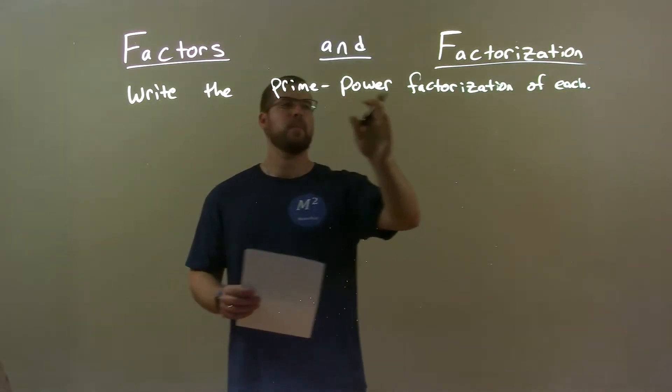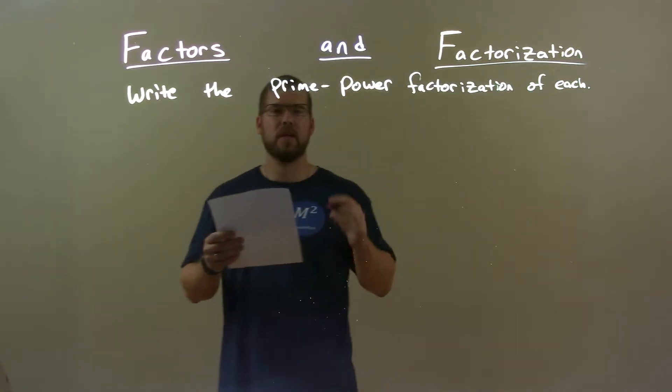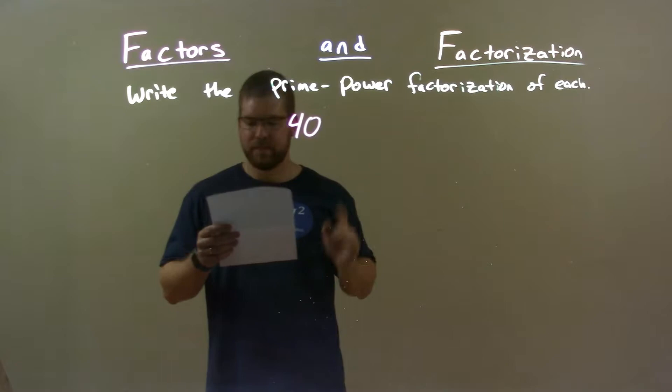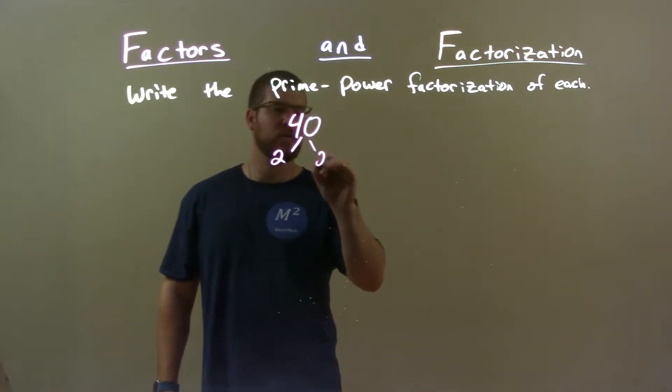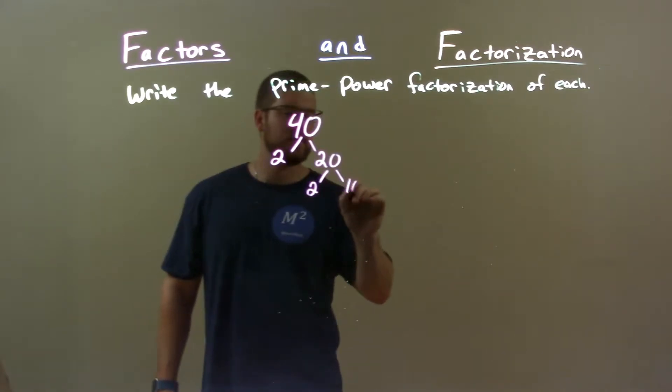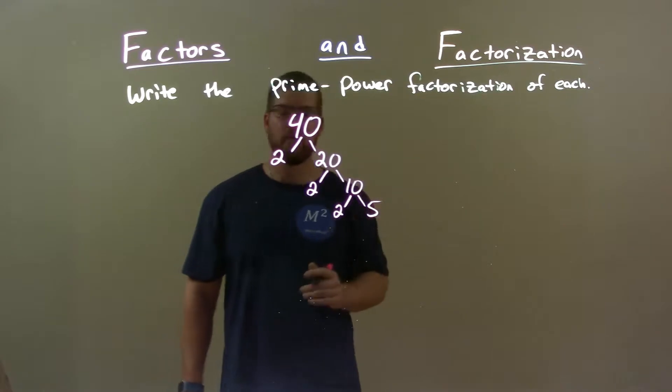I'm going to write the prime power factorization of each. So if I was given this number, 40. Well, 40 breaks down to be 2 times 20. And 20 breaks down to be 2 times 10. 10 breaks down to be 2 times 5.